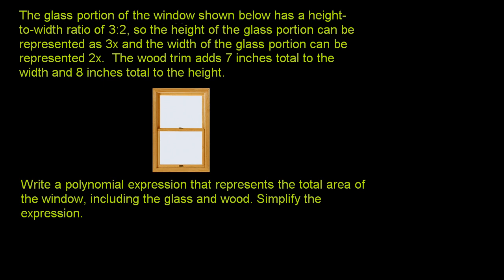We're told that the glass portion of the window shown has a height to width ratio of 3 to 2. The wood trim adds 7 inches to the total width and 8 inches to the total height.